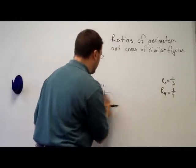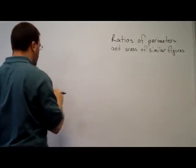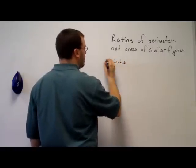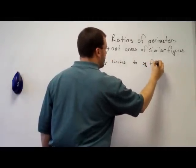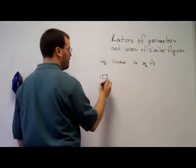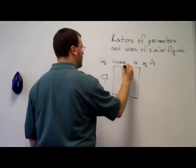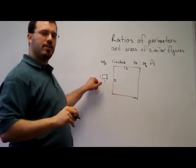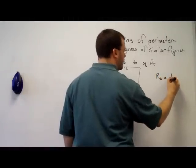One final example of this, to just kind of hit that idea that it's the ratio of the sides squared, would be converting from square inches to square feet. Well, the ratio of the sides of a square inch to a square foot. One inch on each side here is 12 inches here. So our ratio of the sides is 1 over 12.